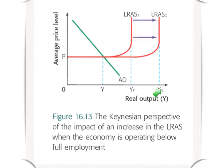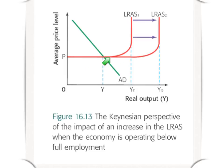The key here is: if the economy is operating below the full employment level, then the increase in the long-run aggregate supply curve will have no effect on the equilibrium point. The economy is initially at equilibrium Y, and an increase in long-run aggregate supply increases the potential of the economy to produce a higher level of output, but aggregate demand is not sufficient to buy up its potential. So the equilibrium remains at Y. While Keynesian economists do not underestimate the importance of supply-side policies in achieving economic growth, they emphasize that the government must intervene in the economy if the economy is operating below full employment.